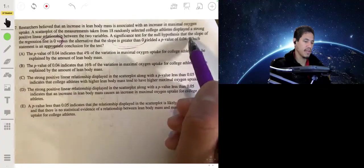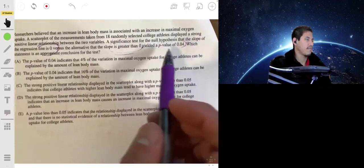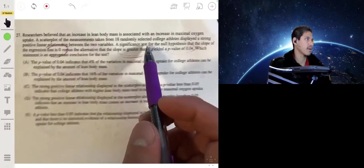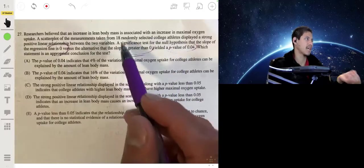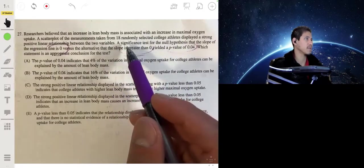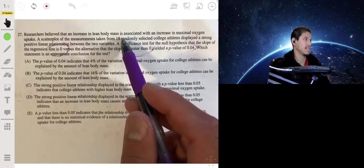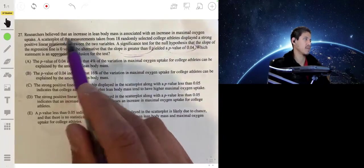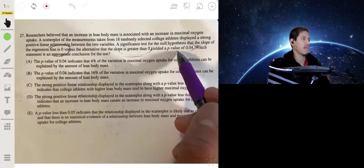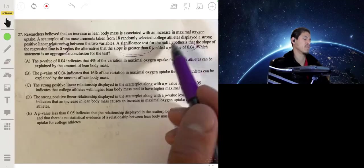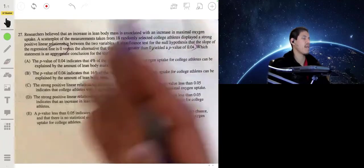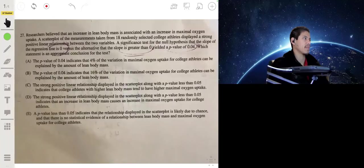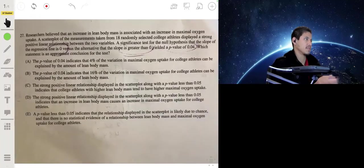If we get a p-value of 0.04, that means there's a 4% chance that we would get data this strong or stronger if the null hypothesis was true, in other words, if there was actually no relationship. So if there was actually no relationship between lean body mass and maximal oxygen intake, then we have a 4% chance that we would get data that showed a strong, positive linear relationship. And usually we have our alpha level of 0.05, so usually we would reject the null hypothesis and we would basically say that we have statistical evidence or strong enough evidence to claim that there actually is a positive relationship that's strong between these two variables.